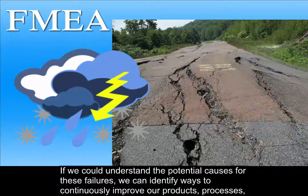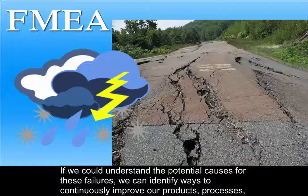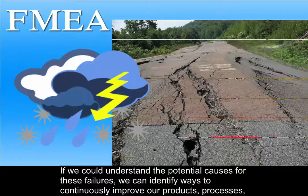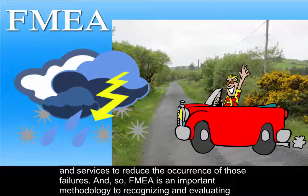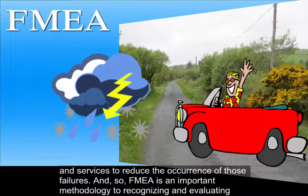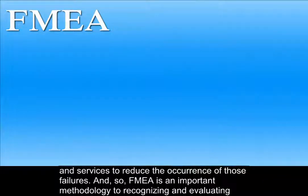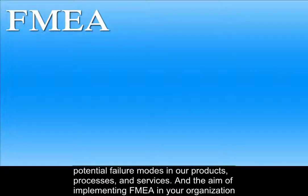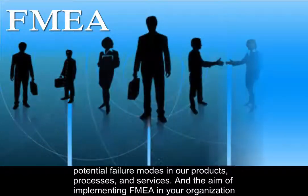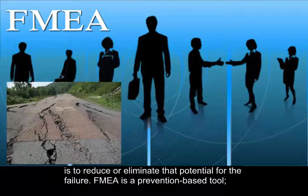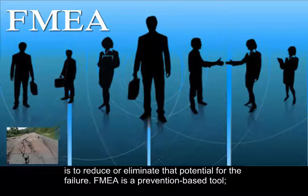If we can understand the potential causes for these failures, we can identify ways to continuously improve our products, processes, and services to reduce the occurrence of those failures. The FMEA is an important methodology to recognizing and evaluating potential failure modes in our products, processes, and services. The aim of implementing FMEA in your organization is to reduce or eliminate that potential for failure.